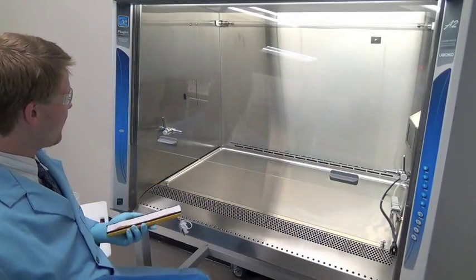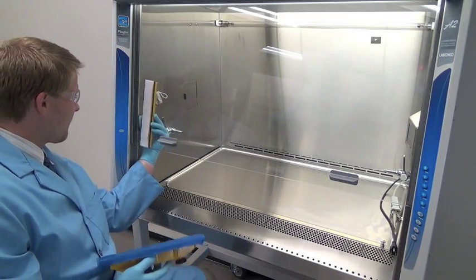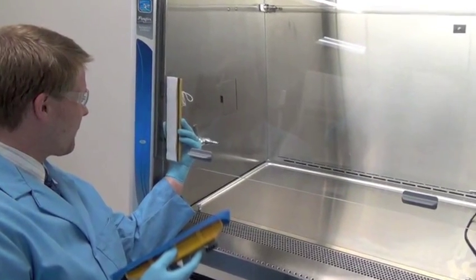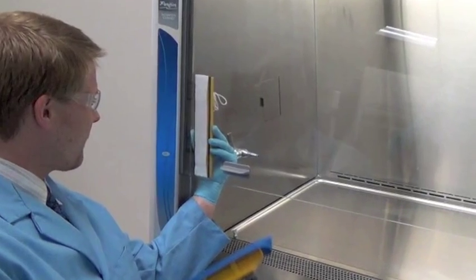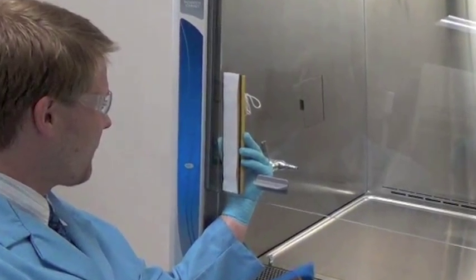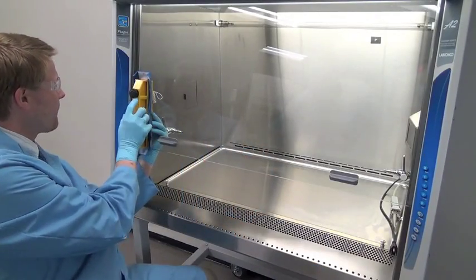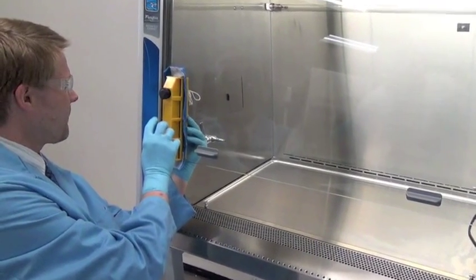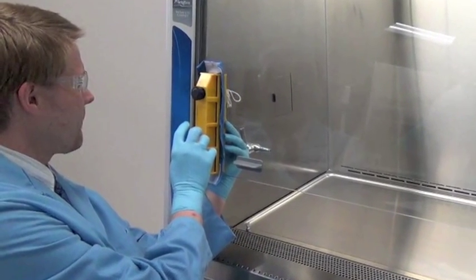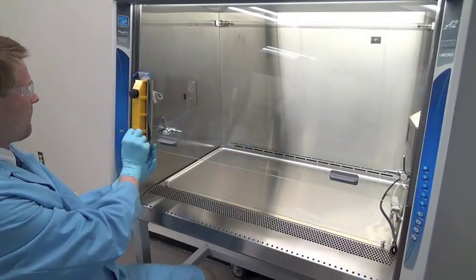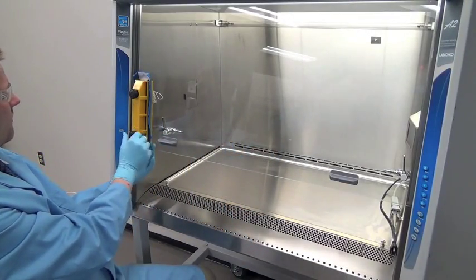With the sash at operating height, place the inside blade vertically with the scrubbing strip against the inside surface of the lower corner of the sash. Position the outside blade against the outer surface of the sash with the microfiber sheet against the glass. Tighten the adjustable magnetic thumb screws.